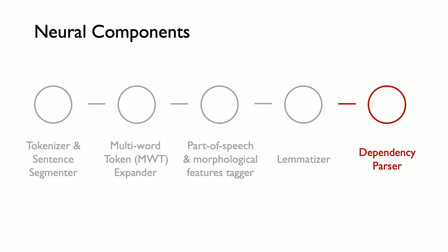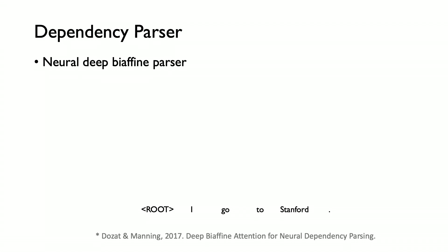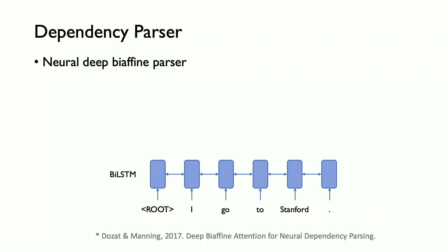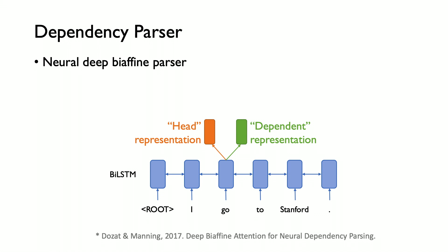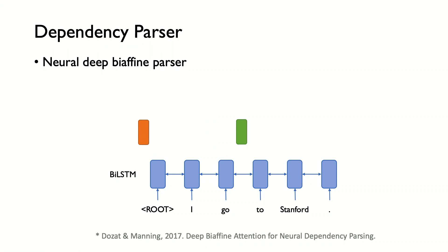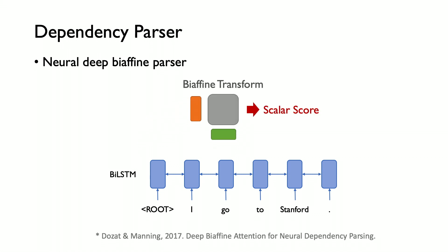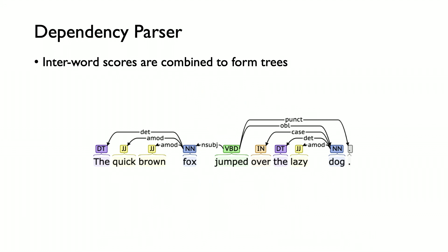Next, let's look at the dependency parser, which takes an input sequence of words and learns to produce a tree structure representing the syntactic structure of the sentence. We implement the neural deep biaffine architecture. The model takes input words, uses an LSTM to convert them into LSTM states, then learns a head representation and a dependent representation for each word. The head and dependent representations of each word pair are combined and compared with a biaffine attention layer to produce a scalar score estimating how likely the two words are dependent on each other. All inter-word scores are combined to form a tree structure representing the grammatical structure of the sentence.